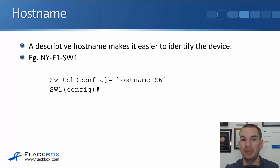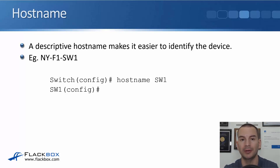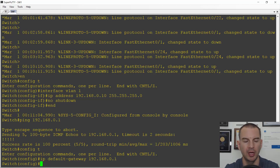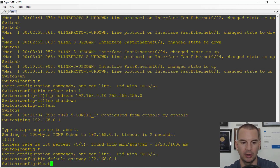The next thing for basic configuration is to configure a hostname. A descriptive hostname makes it easier to identify the device — for example, you might call it 'NewYork-floor1-switch1', specifying where the switch is along with a descriptive label. In the lab, I'm just going to call it 'sw1' for switch1. Right now the default hostname on a switch is just 'switch', and that's what's showing up on the command prompt.